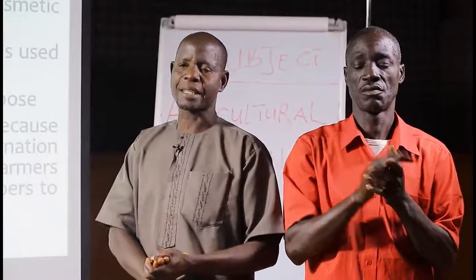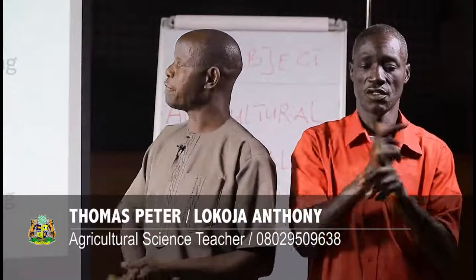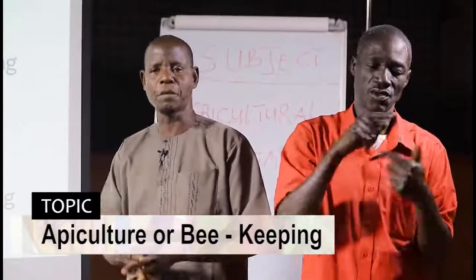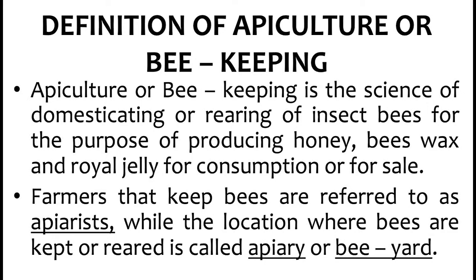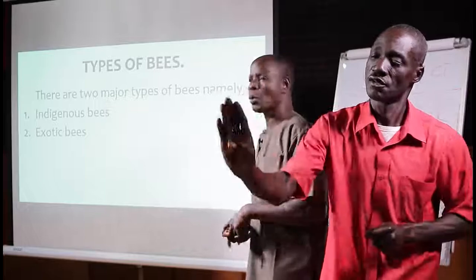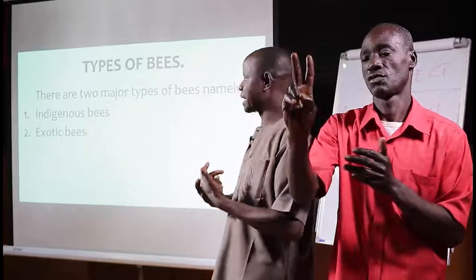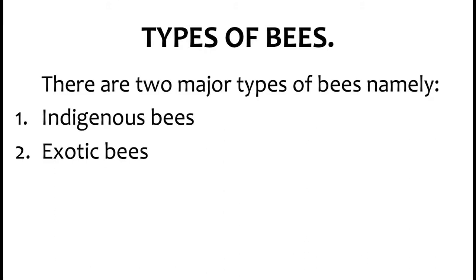My dear students and listeners at home, this marks the end of the lesson. Let us review briefly what we have seen today. We gave the definition of apiculture or beekeeping, in which we said that bees are domesticated or reared for the purpose of production of honey, wax, and royal jelly for commercial purposes or consumption. We also discussed the types of bees, and I identified two: the indigenous bees and the exotic bees.